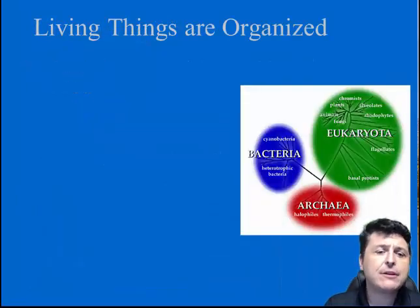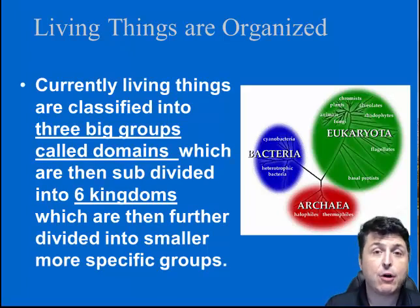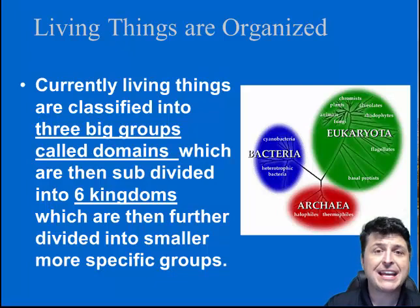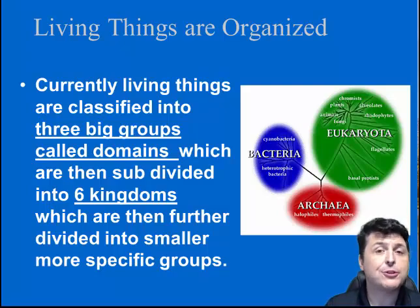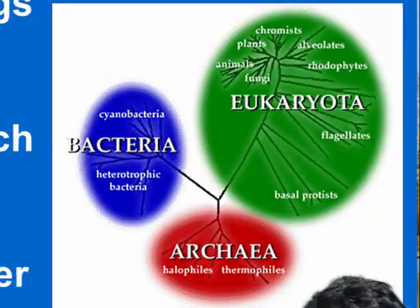Our modern system of classification has different levels of grouping — kind of like narrowing from a whole store down to just movies and then a specific movie. The broadest group in our modern classification system is called domains, and there are three domains: domain Bacteria, domain Archaea, and Eukaryota.